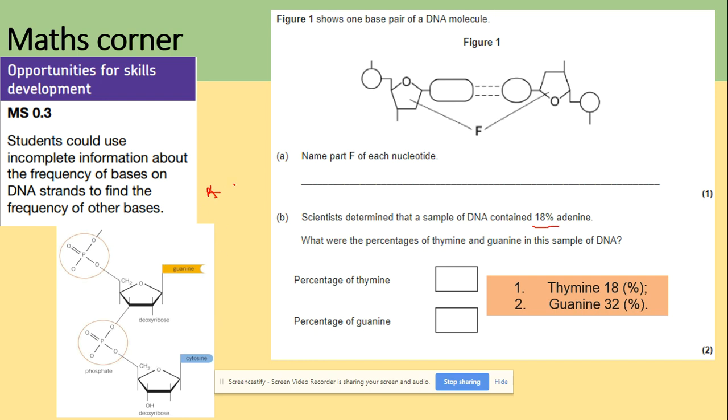Adenine and thymine both will have 18, so in total that's 36 percent. In total we have 100 percent minus 36 which is 64. 64 percent refers to what we've got left, guanine and cytosine, so we divide by two which gives 32 percent for guanine and 32 for cytosine. Thymine will be the same as adenine at 18.